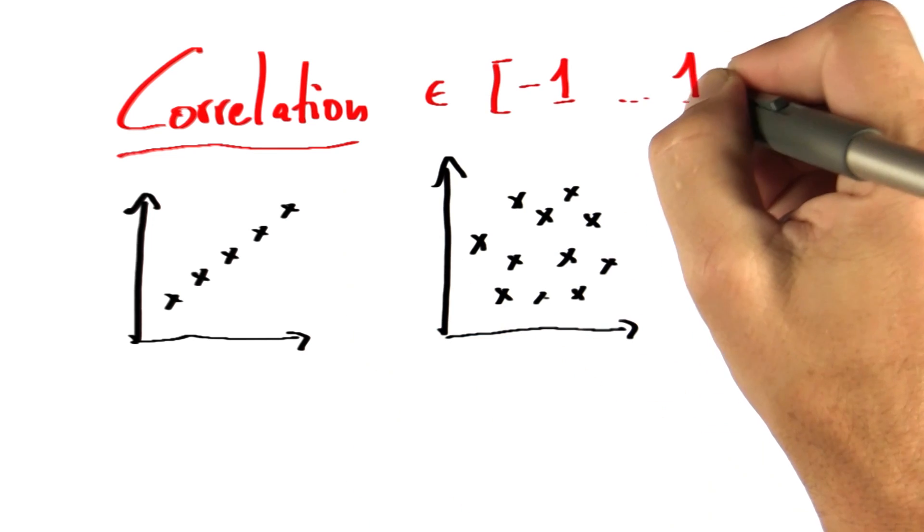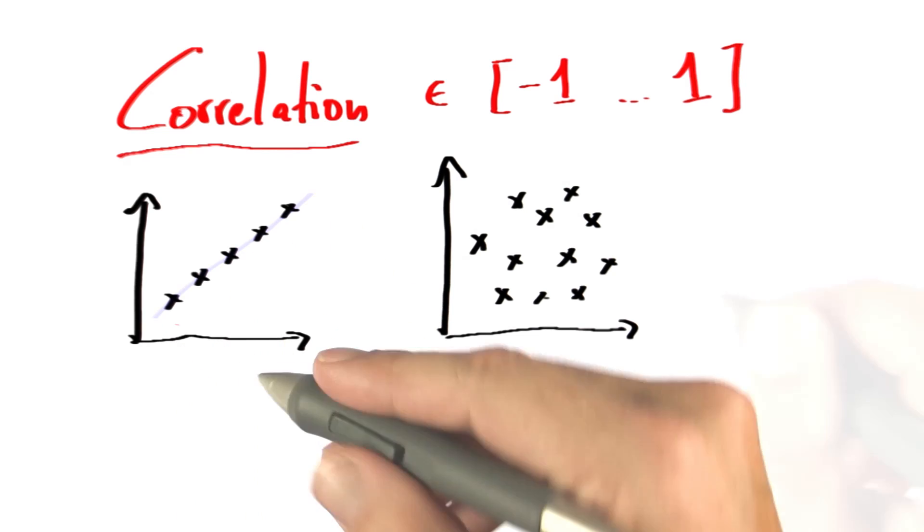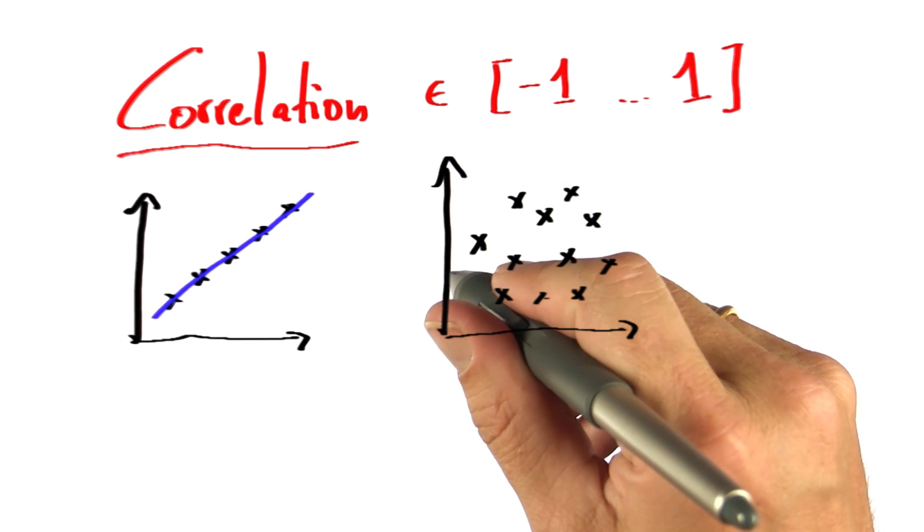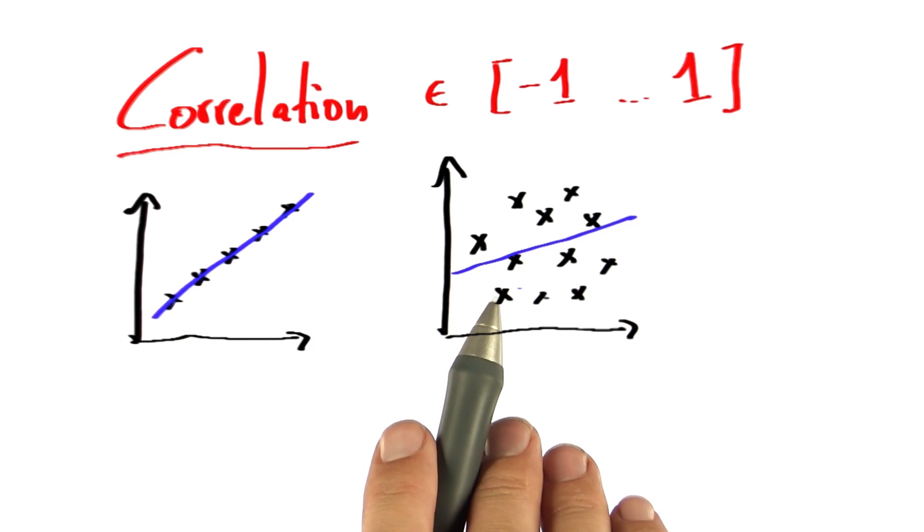Correlation is a measure that lies between minus 1 all the way to 1 that tells us how well the data is described by a line. In both cases, we can fit a line, but in one case, it'll be a really good description of the data, whereas in the others, it won't.